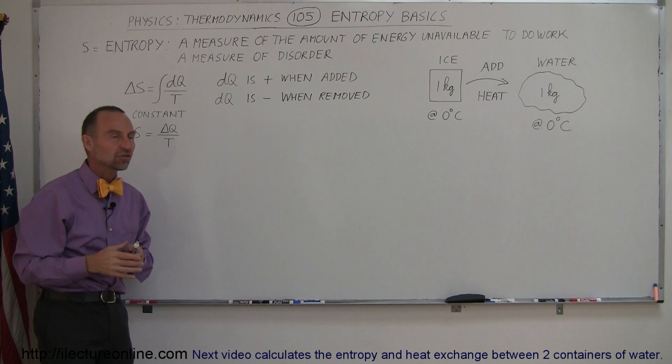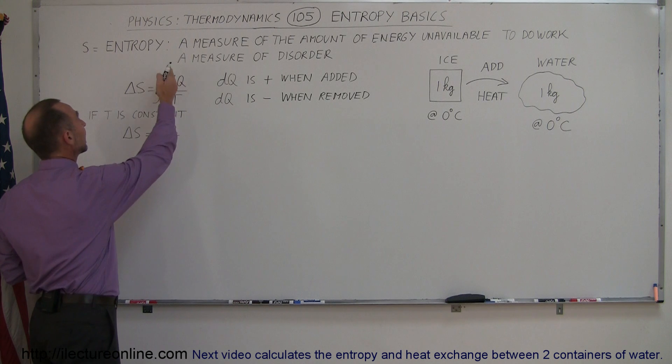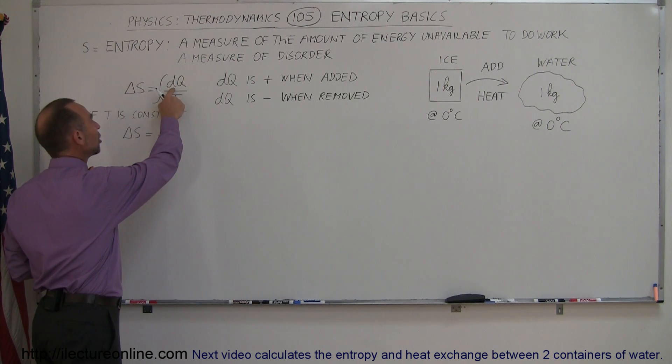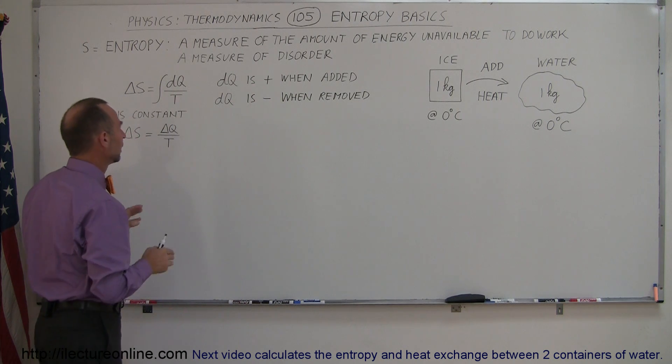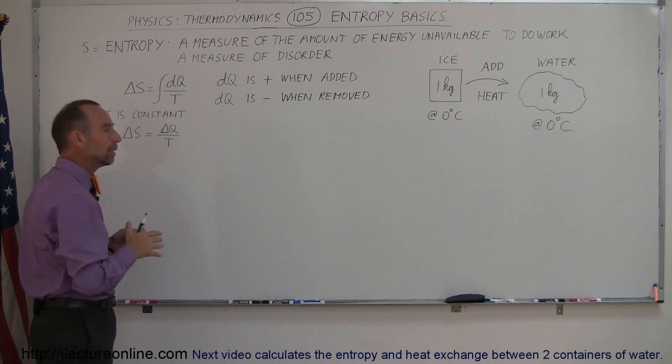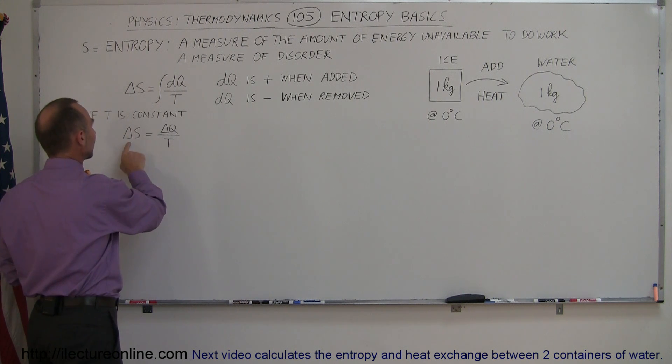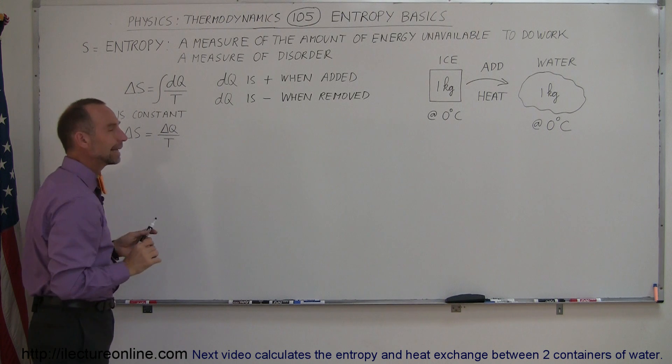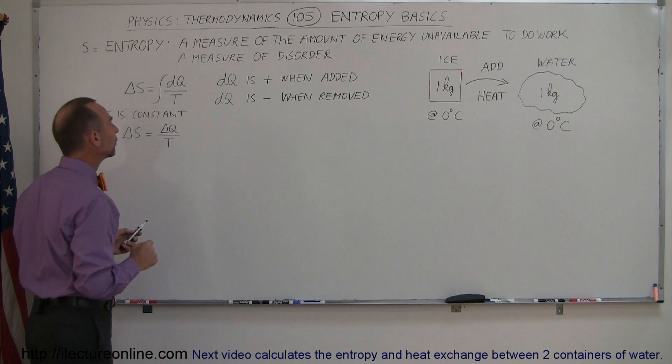So what we usually try to do is measure or calculate that change in entropy. That little triangle there means change in. So we're looking for the change in the entropy which is typically positive and normally we calculate it by taking the integral of the exchanged heat divided by the temperature at which that occurs. Now typically in more simple problems the temperature is kept constant and so we can find the change in the entropy by simply calculating the difference in the heat or the amount of heat added to the object divided by the temperature of the object.